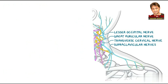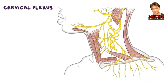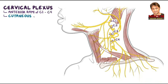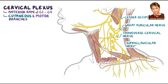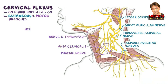Let's do a quick recap. The cervical plexus forms from the anterior rami of spinal nerves C1, C2, C3, and C4, and has two types of branches: cutaneous and motor. The cutaneous branches are represented by the lesser occipital nerve, great auricular nerve, transverse cervical nerve, and supraclavicular nerves. The motor branches are represented by the ansa cervicalis, phrenic nerves, nerve to the thyrohyoid, and nerve to the geniohyoid.